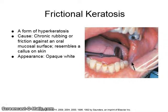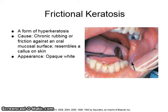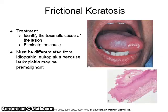Frictional keratosis is a form of hyperkeratosis caused by chronic rubbing or friction against an oral mucosal surface. It can resemble a callus on the skin, and its appearance is opaque and white. To treat frictional keratosis, you must first identify the cause of the trauma and then eliminate it. Frictional keratosis must be differentiated from idiopathic leukoplakia because leukoplakia may be premalignant.